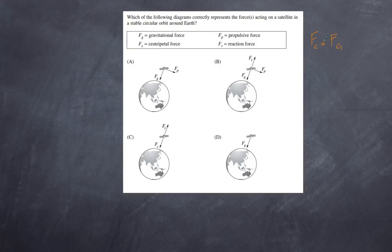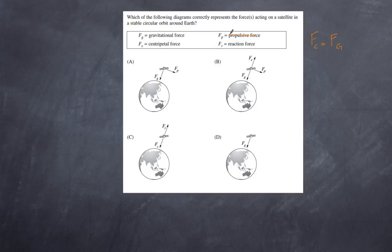An object is trying to continue in a straight line, but because of the gravitational force it accelerates towards the center — that's the whole nature of centripetal motion. Any forces tangential to the motion are incorrect. There is no forward propulsion on satellites in a stable circular orbit. The only time there may be a propulsion force is if the satellite is moving to a higher or lower orbit. Since this is a stable circular orbit, propulsion is absent, which automatically discounts options B and A.